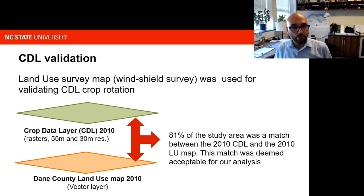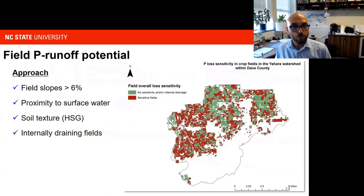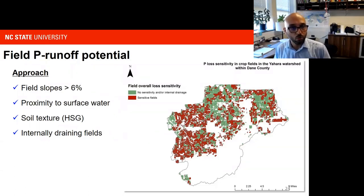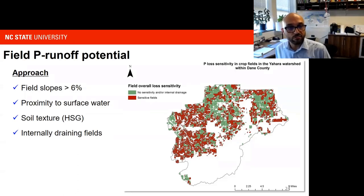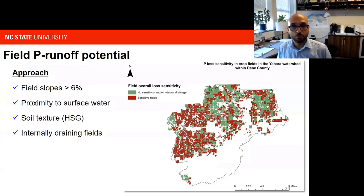An additional step was to classify fields in terms of their likelihood to contribute to phosphorus loss as edge-of-field losses to streams and the river and lake system. We used a composite of key soil and hydrologic indicators — slope, which correlates with runoff and nutrient losses; parcel proximity to surface water; and soil texture. We excluded internally draining fields and developed a binary system to identify whether a field is sensitive or not sensitive to phosphorus loss, and incorporated that into the optimization criteria.